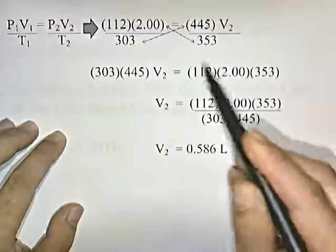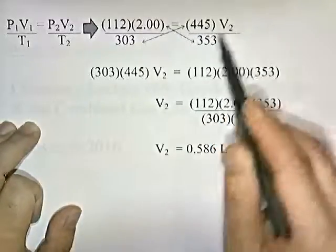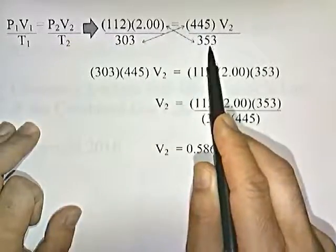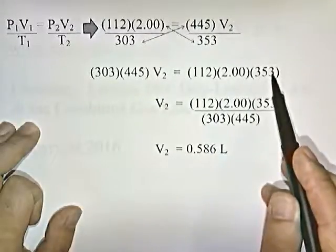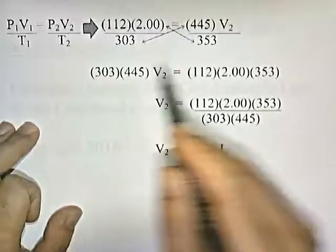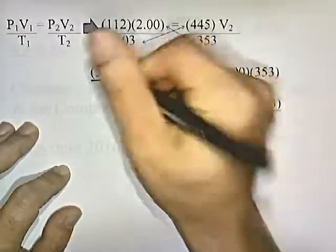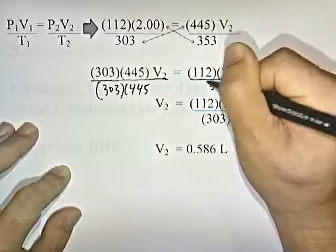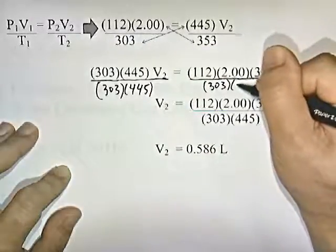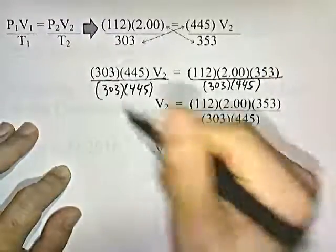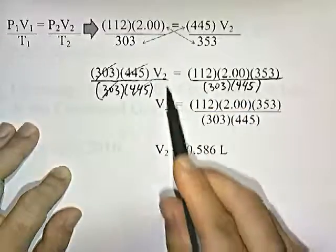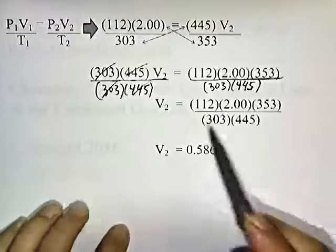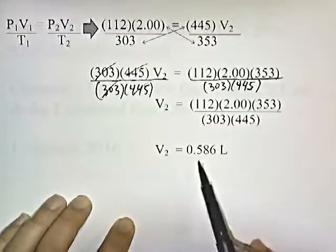To solve for V2, we cross multiply: 303 times 445 times V2 equals 112 times 2 times 353. Then divide both sides by 303 and 445, so those cancel, leaving V2 equals 112 times 2 times 353 divided by 303 times 445. If you multiply everything on top and divide by the product on the bottom, you get 0.586 liters.